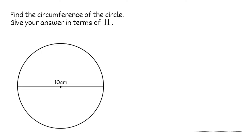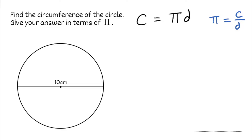For today's video we're going to take a look at finding the circumference of a circle. When we want to find the circumference, we use the formula: circumference equals pi multiplied by the diameter. We can rearrange this — dividing both sides by the diameter gives us pi equals circumference divided by diameter. That's exactly what pi is: the ratio between the circumference and diameter of a circle. So pi, to two decimal places being 3.14, means the circumference is always 3.14 times bigger than its diameter.